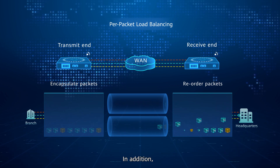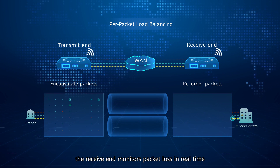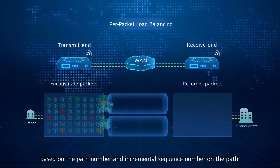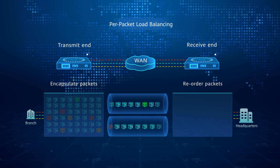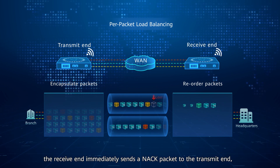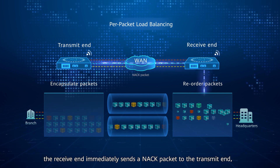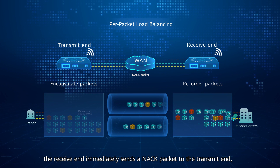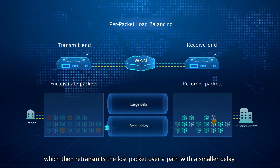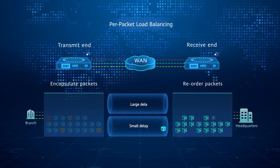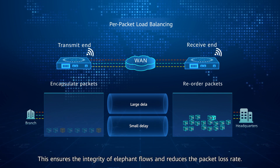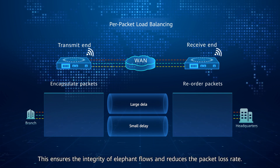In addition, the receive end monitors packet loss in real-time based on the path number and incremental sequence number on the path. In the event of packet loss, the receive end immediately sends a NAC packet to the transmit end, which then retransmits the lost packet over a path with a smaller delay. This ensures the integrity of elephant flows and reduces the packet loss rate.